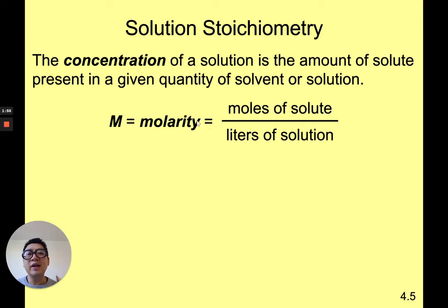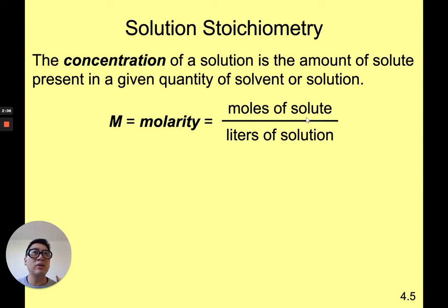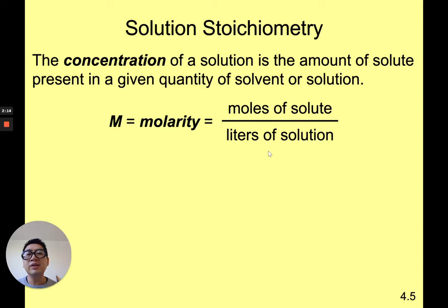Molarity is the biggest one. The symbol for molarity is capital M. Molarity is defined as the moles of solute — whatever it is that you're dissolving — divided by liters of solution. So moles of solute divided by the total liters of solution, and that is defined as molarity, written as capital M.